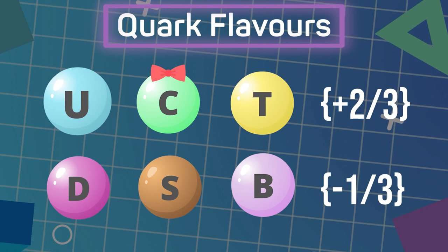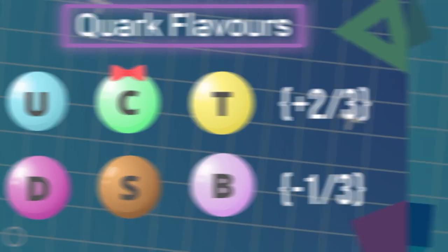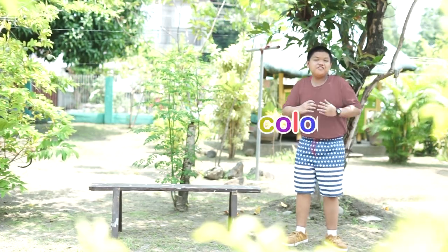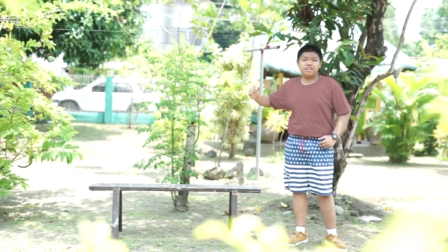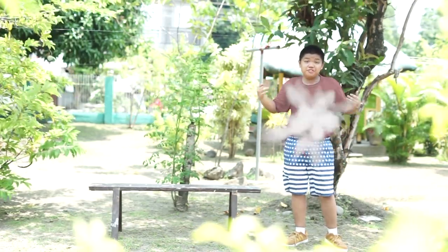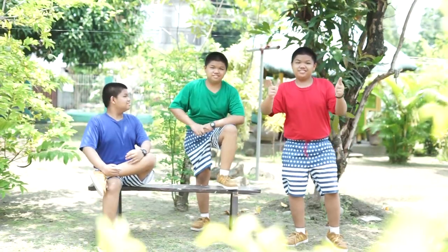Each flavor has a different electric charge in fractions. Up and down are the most stable and common flavors. Quarks also have colors to represent their color charge when exchanging gluons — it can be red, blue, or green.